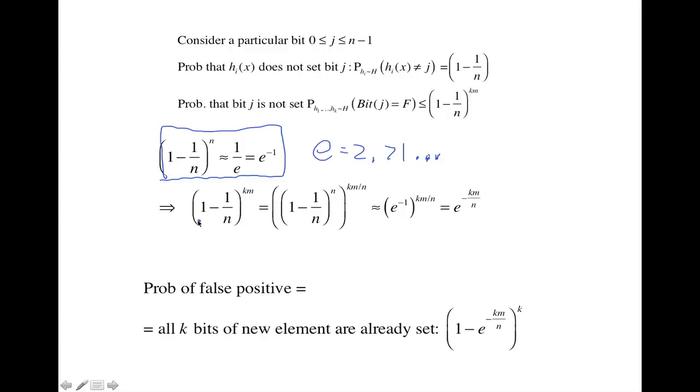So using this, we can simplify what we had before, 1 minus 1 over n to the km. We can rewrite as 1 minus 1 over n raised to the power n. And all that then raised to the power km over n. Because this n and this n cancel each other. And that's equal to e to the minus 1 to the km over n, that's from here. And then that just simplifies to this. So we have now a simpler expression for the probability that the bit j is not set.